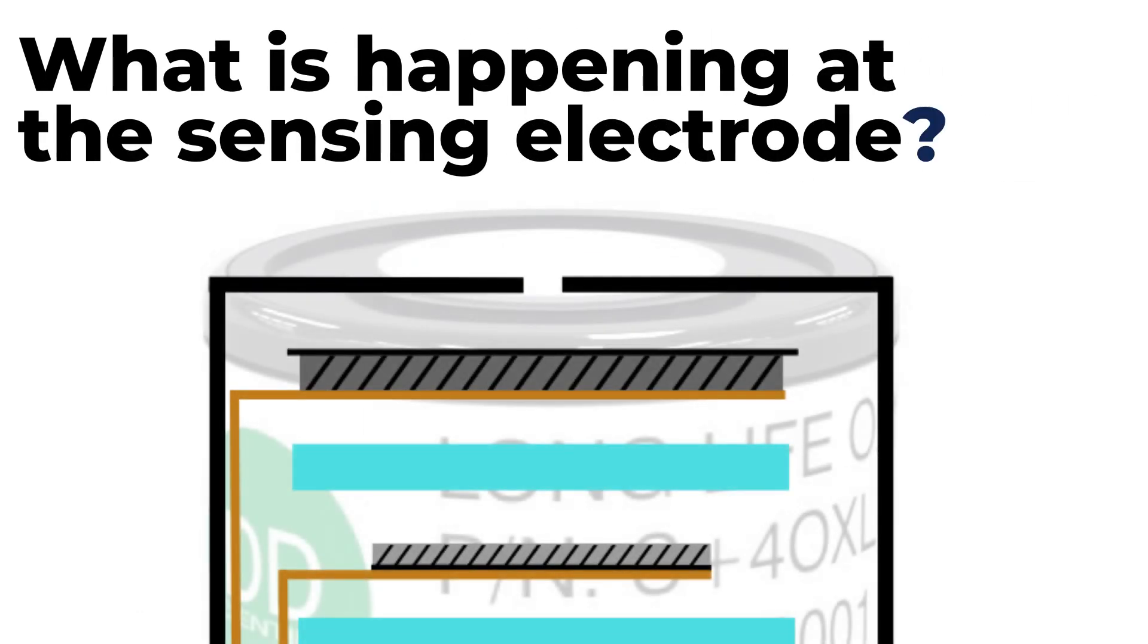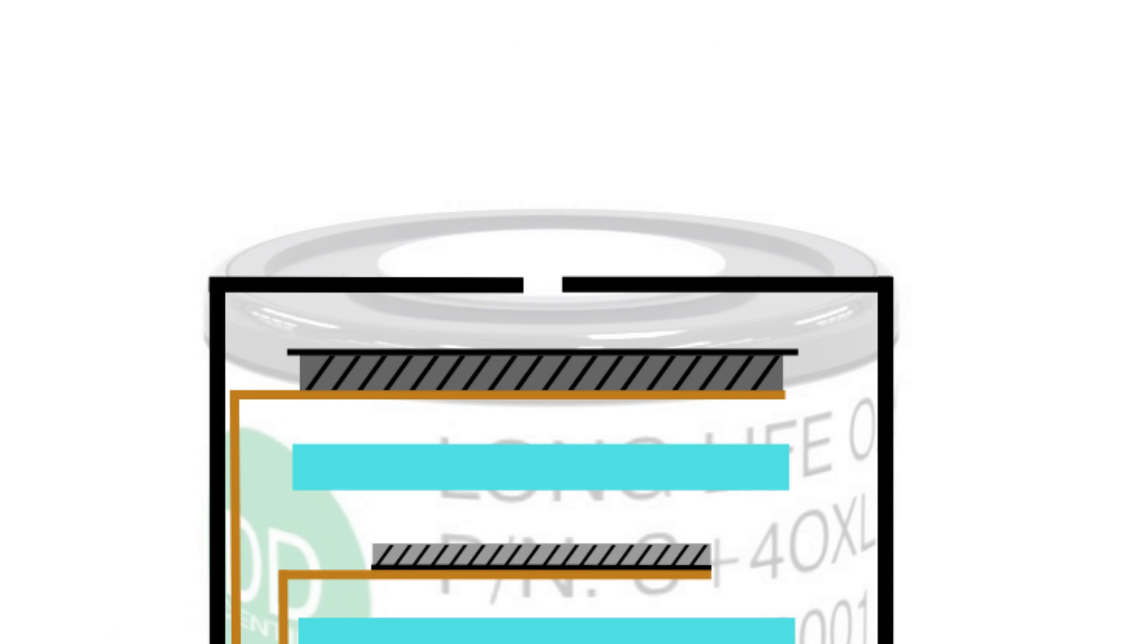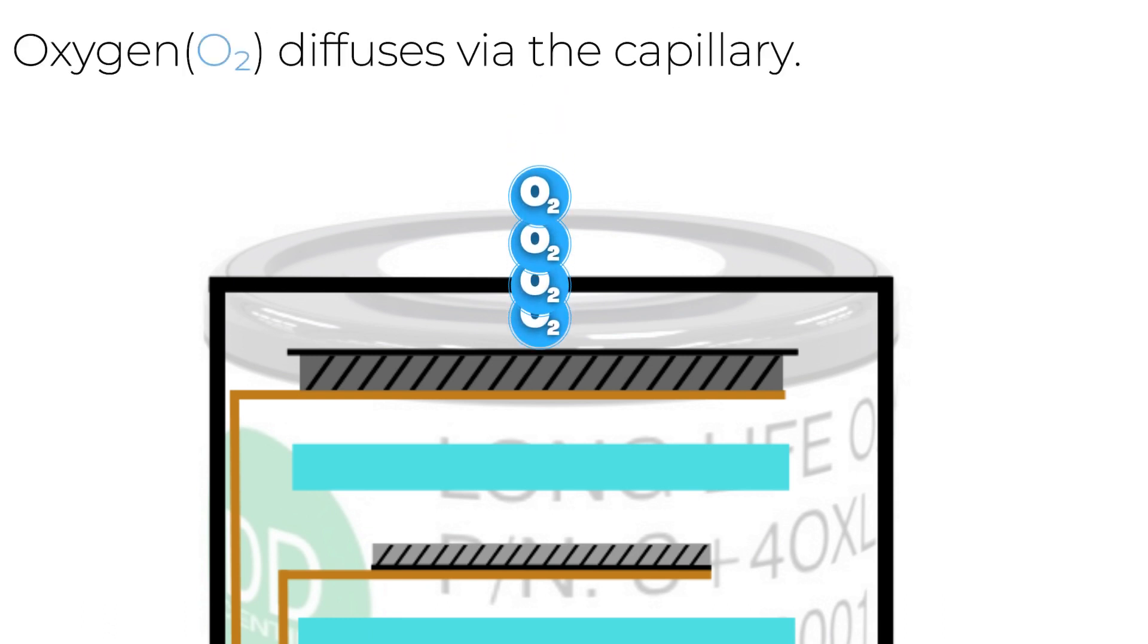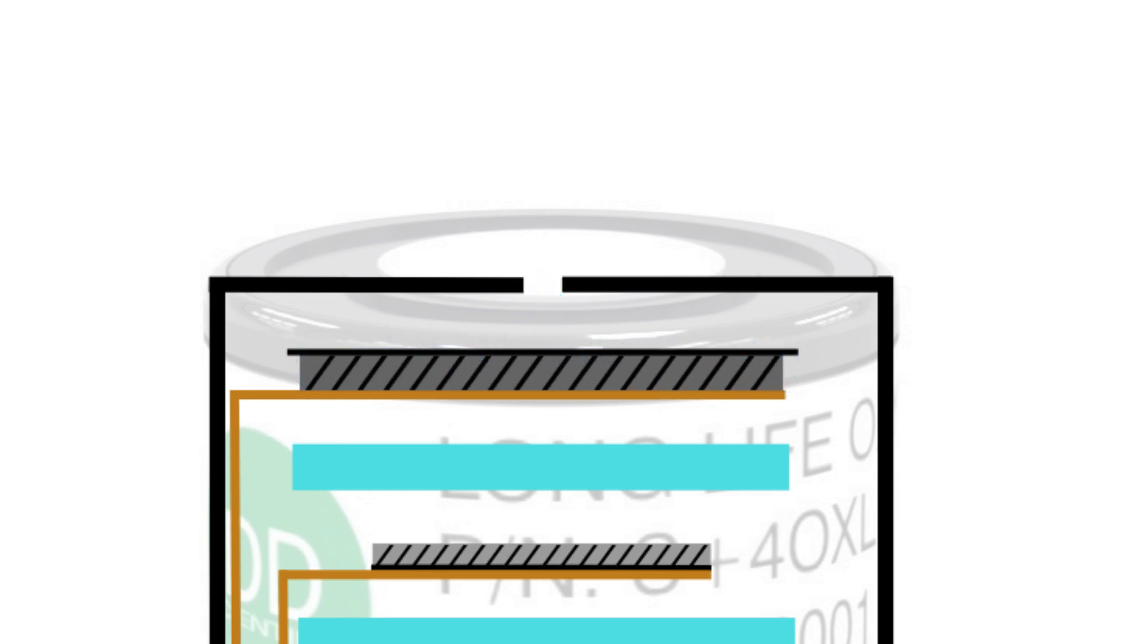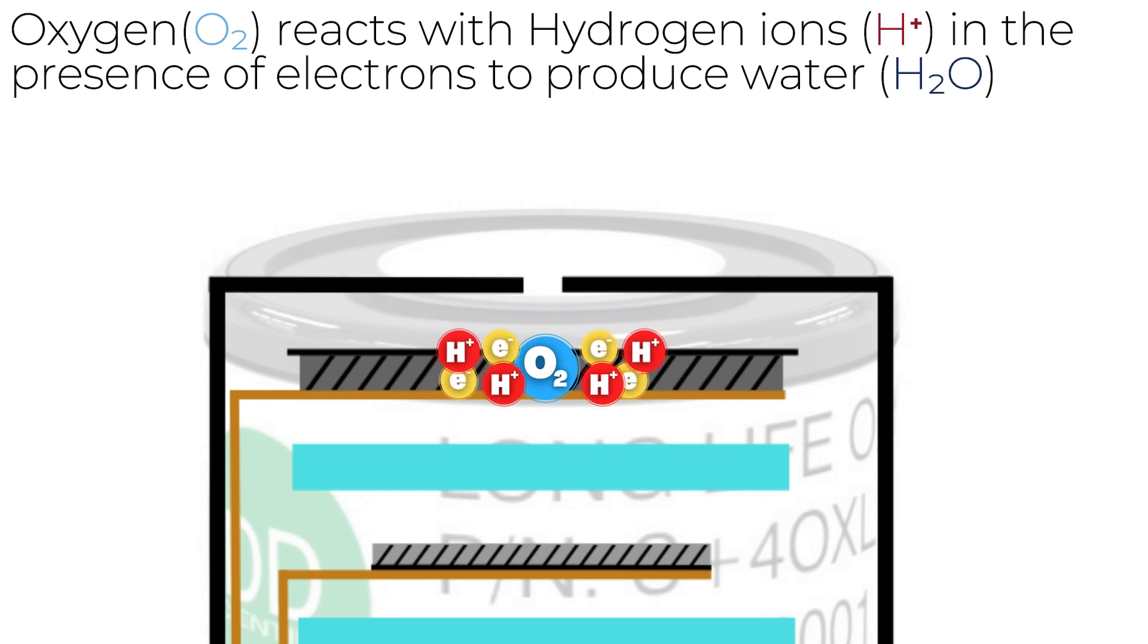So now let us talk about the chemical reactions which occur inside the sensor. As oxygen enters the sensor it encounters the sensing electrode where in the presence of hydrogen ions, also known as protons, and electrons it is reduced to produce liquid water.